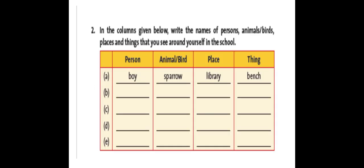One more homework I have given you that in the column given below, write the names of persons, animals, birds, places and things that you see around yourself in the school. Whatever you look in the school. I think all of you are going to school in standard 2. So remember that, whatever is in your school, you write it here.